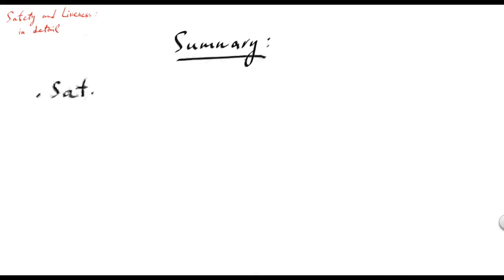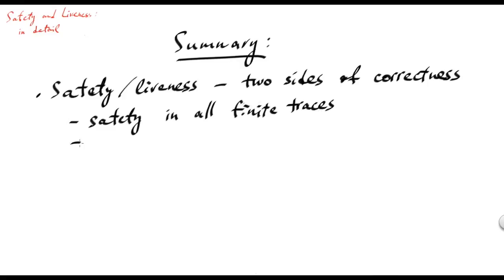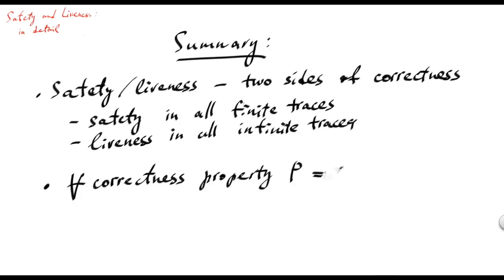To summarize, safety and liveness are two sides of correctness in programs. Safety says that nothing bad will ever happen, and when you check correctness you need to verify that safety holds in all finite traces. To show that your program does something useful eventually, you should check liveness in all infinite traces. And finally, given that whatever correctness criterion you have is an intersection of safety and liveness, you can show that your program is correct.